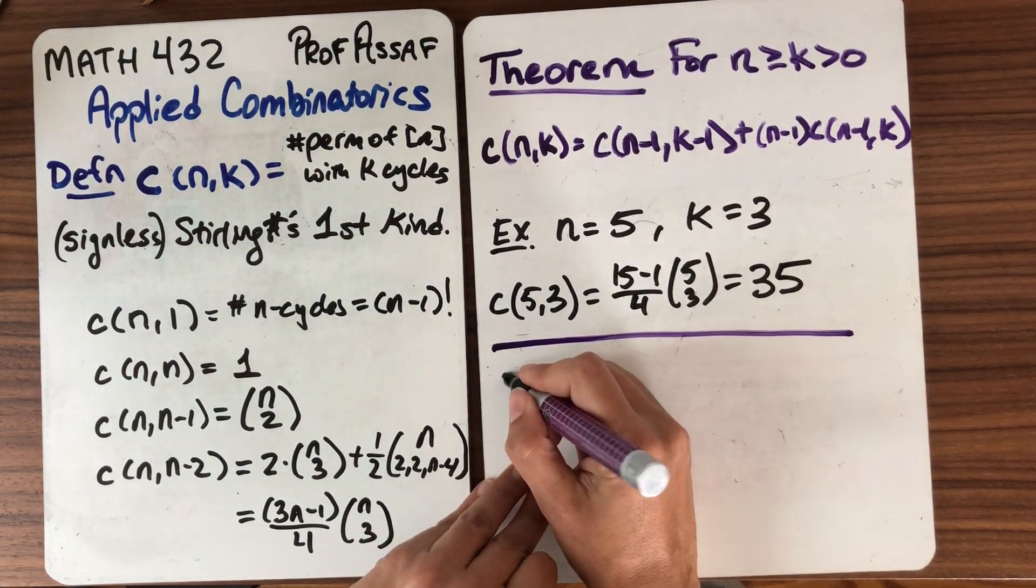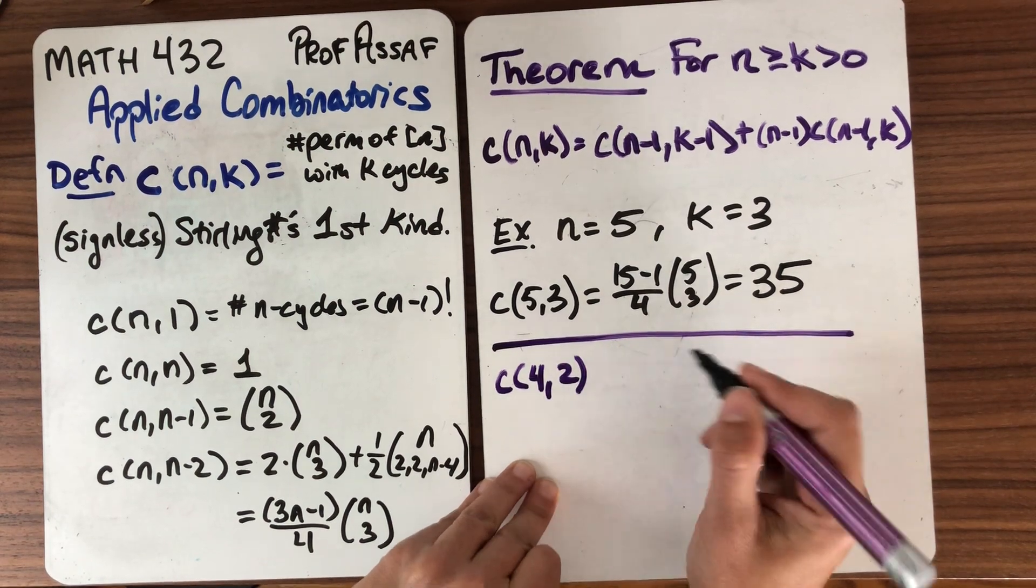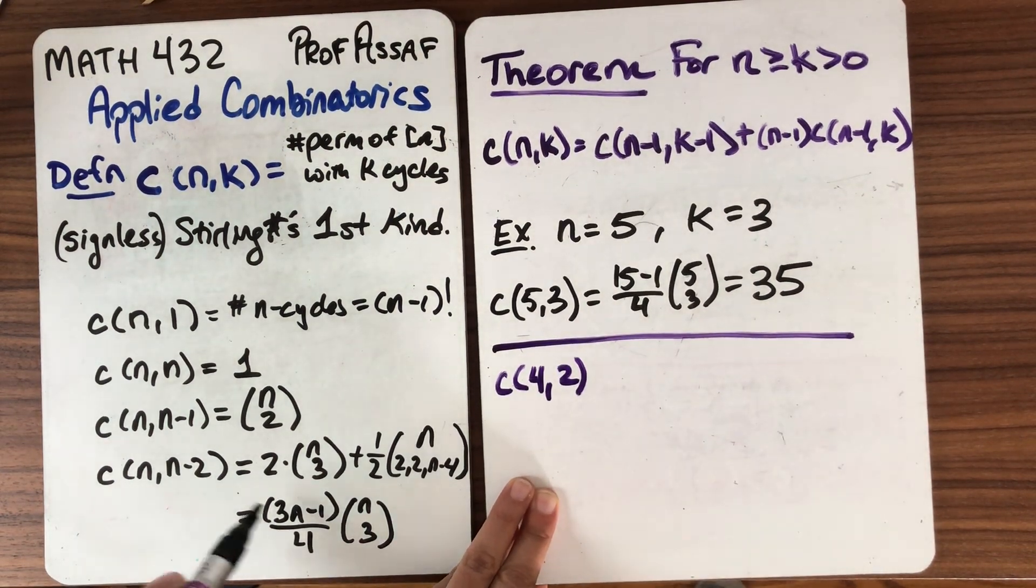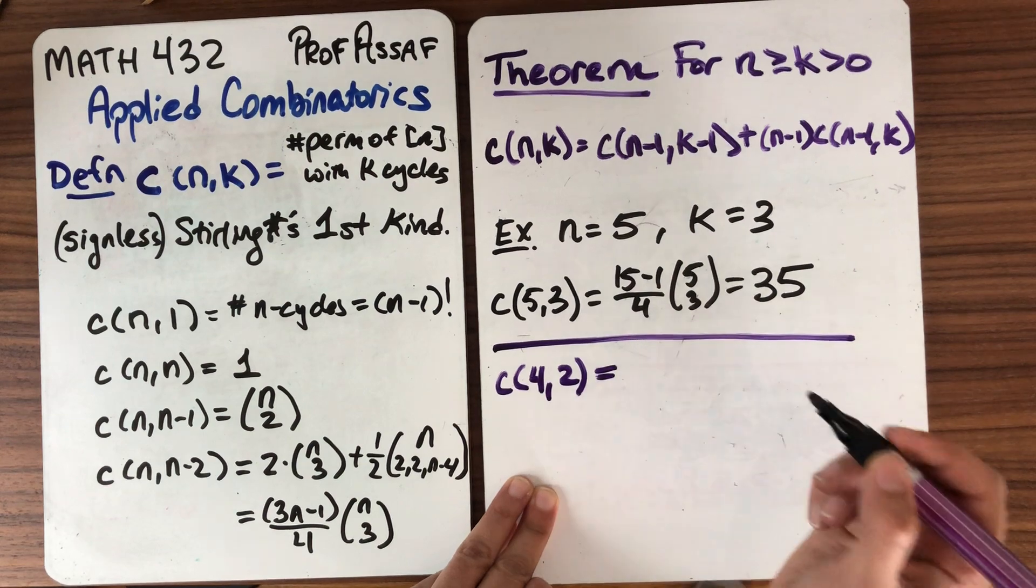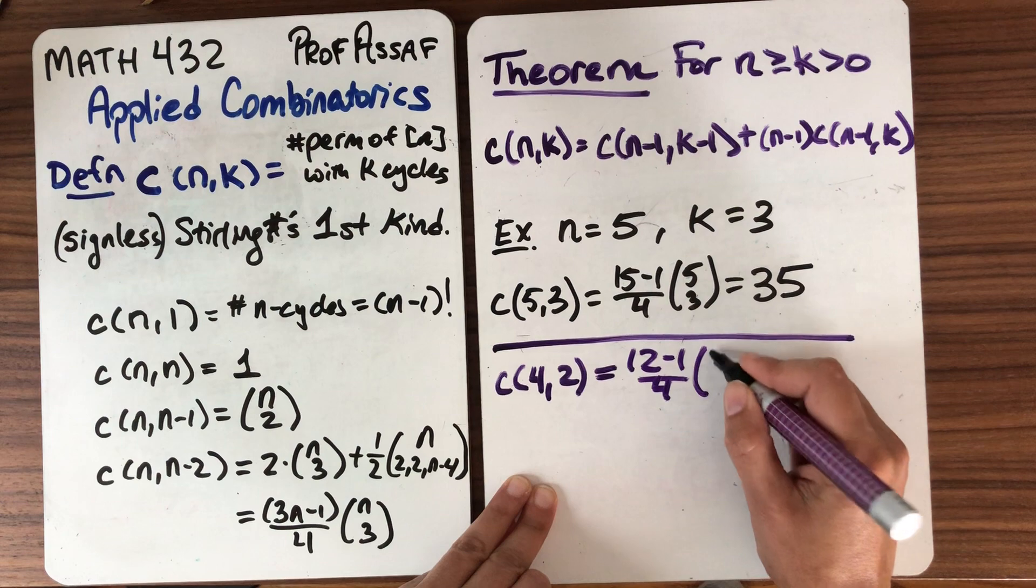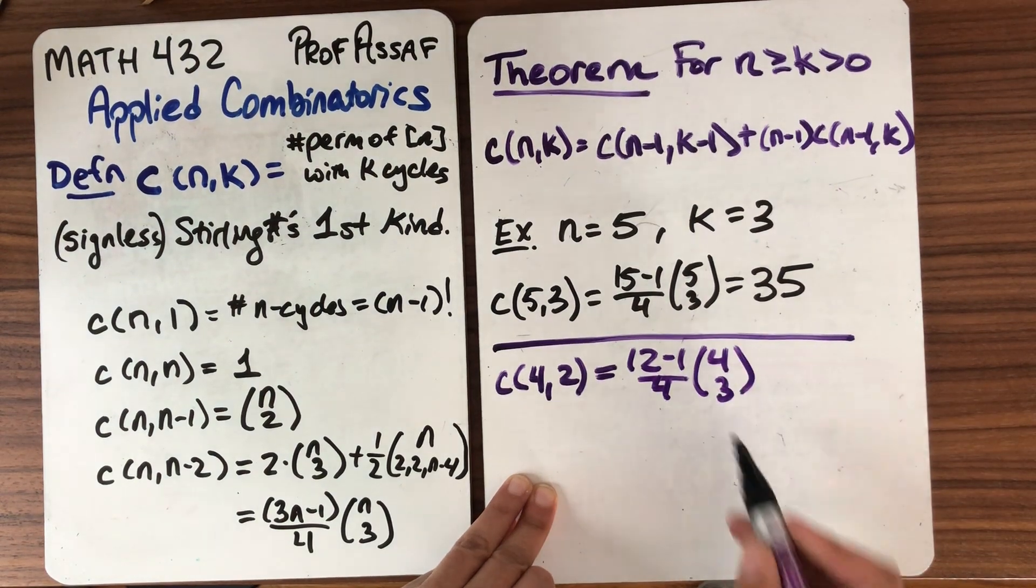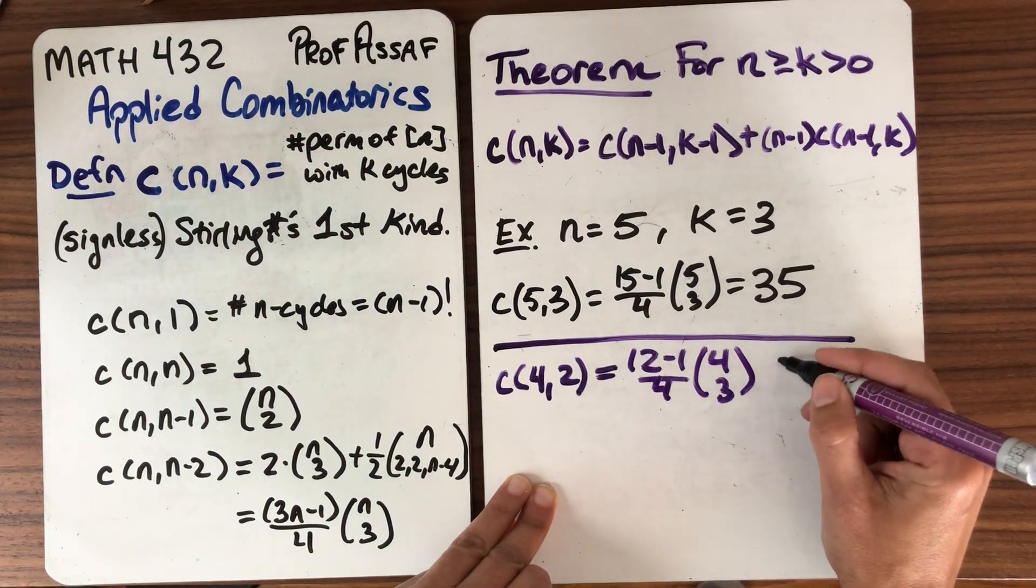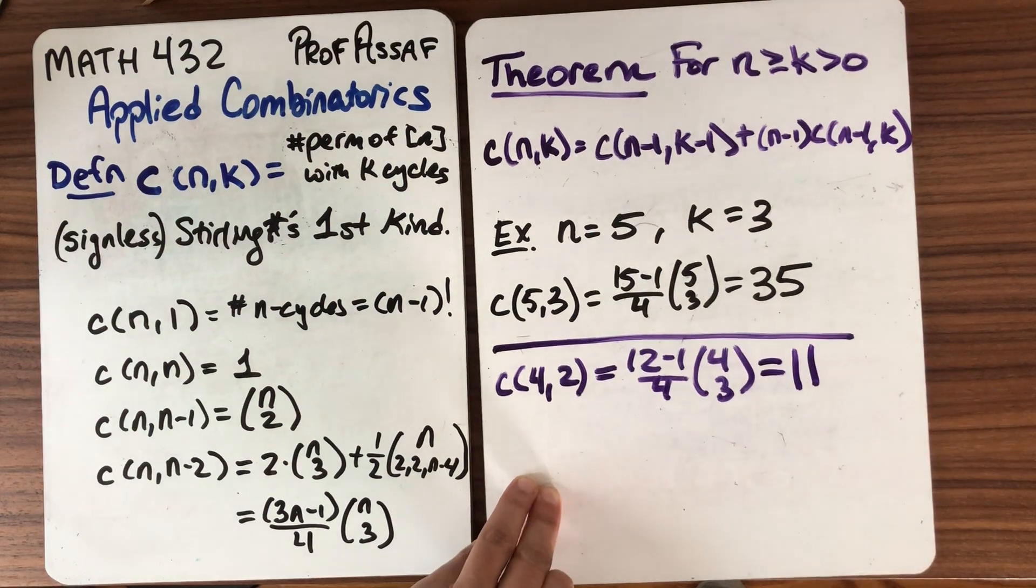What is c(n-1,k-1)? So c(4,2). Unfortunately, we're going to have to use this formula again. But that's okay. It's not so bad. Now we're going to have 3 times 4 minus 1 divided by 4 times 4 choose 2. 4 choose 2 is six, so that cancels out. Four choose three is four. So that cancels out. So we get 11.